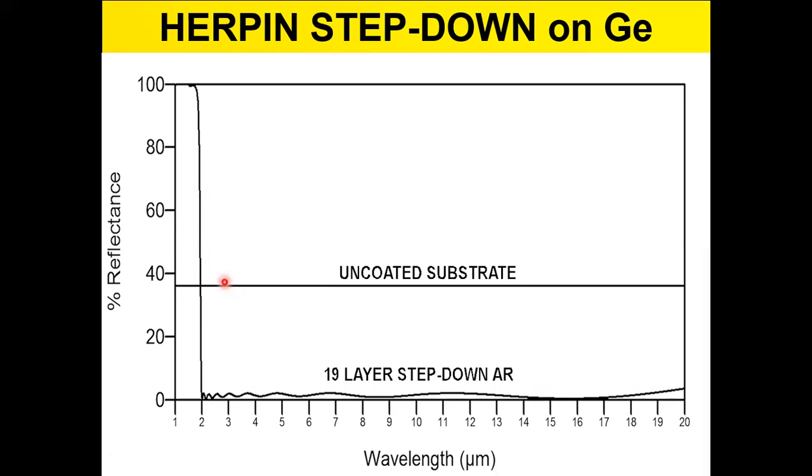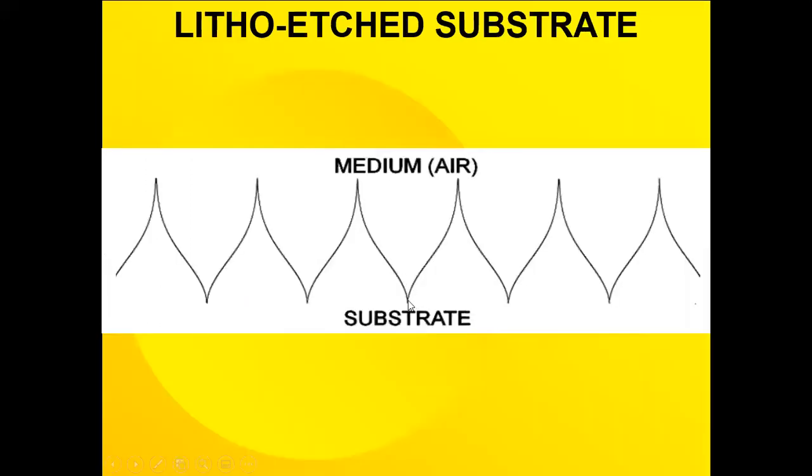There's another way to do this and that would be to use lithographic techniques where I can etch the substrate. We now develop technologies to etch a lot of materials. So it's potentially possible to etch, for example, a germanium surface.